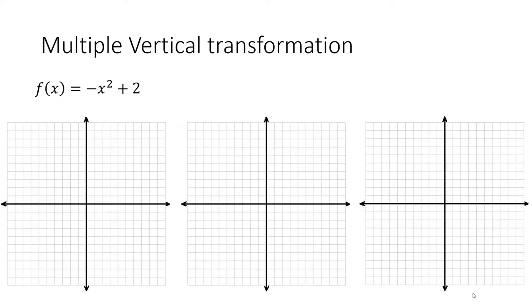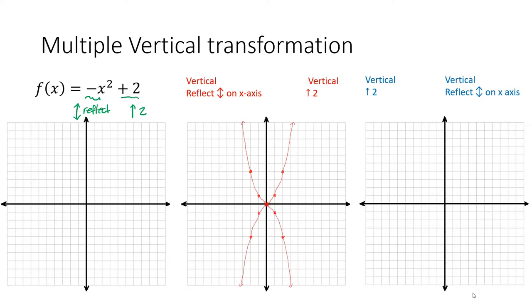Now, what if there are multiple vertical transformations? Here we have a vertical reflection and vertical translation. So let's do a reflection first on x-axis. Now shift up 2. Now backwards. Move it up 2 first, and then reflect. They are different.